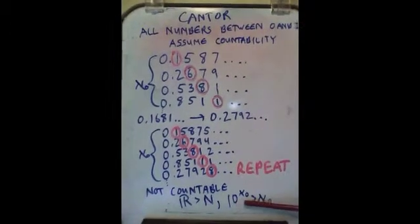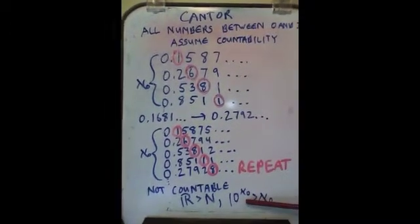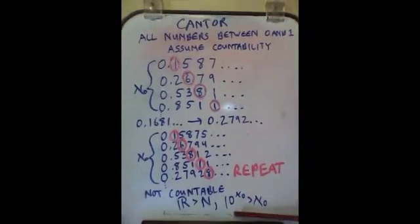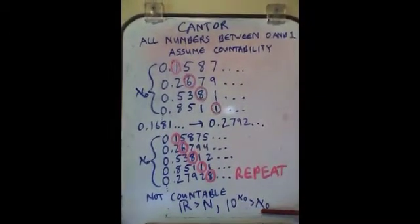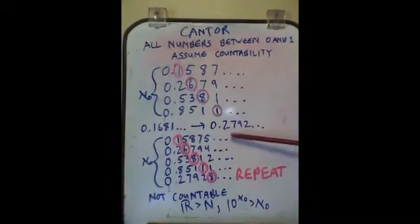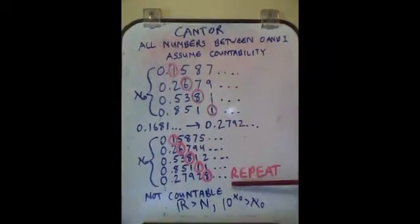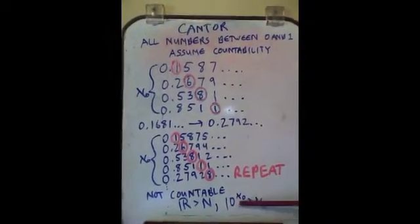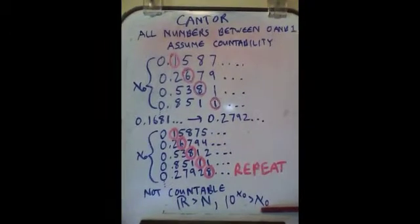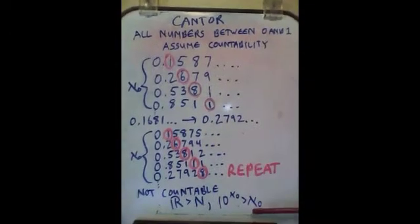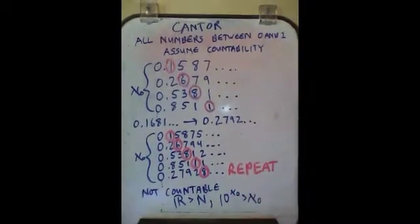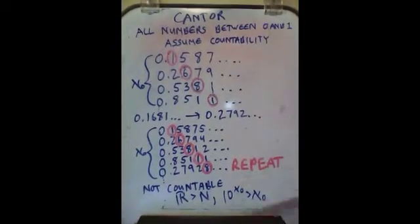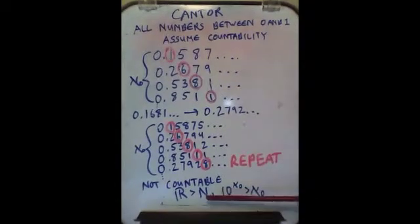Now 10 to the aleph-null could be a binary number system, but we'd have the same problem. So ordinarily mathematicians will use 2 to the aleph-null, and we shall be using that from here on forward because any base system would give us the same problem. We'll use 2 to the aleph-null as greater than aleph-null, and the other reason we're going to use that is because set theorists prefer 2 to the aleph-null as their assumption of counting permutations in a set.